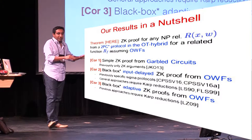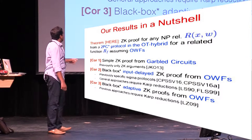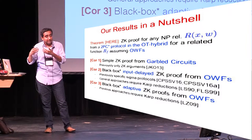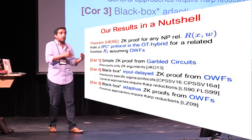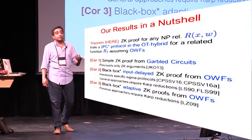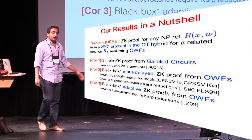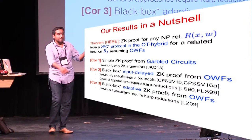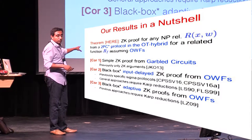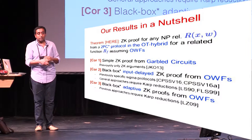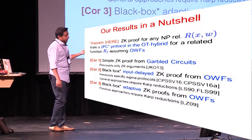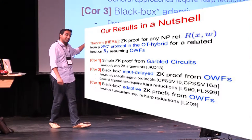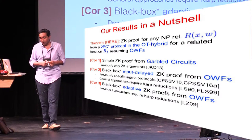Third, and technically most involved, which I probably won't have time for today, we also construct adaptive zero-knowledge proofs. Adaptive means the simulator not only needs to simulate the view of the verifier, but if the prover is corrupted, it should also produce a view for the prover consistent with the transcript generated. We show this starting from 2PC protocols. Previously, constructing adaptive zero-knowledge required Karp reductions and was done by Lindell and Zerosene.